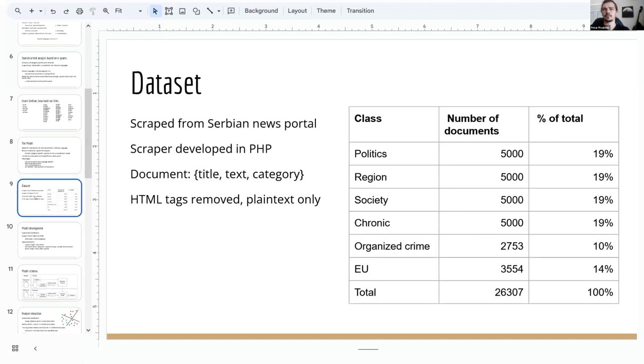A dataset is formed by scraping the news from Serbian news portal. It required writing a simple scraper, which we happily implemented in PHP, and the resulting dataset contains roughly 32,000 documents. Each document contains a title, text, and category. HTML tags are removed. We have plain text content only. The table on the right shows the categories and number of collected documents classified in each category. The dataset can be considered balanced in terms of category representation. We also see that the categories are thematically relatively close. We have politics, regional, society, chronic, organized crime, European Union. It's not that we have web development and Greek philosophy, which further highlights the measured accuracy, which will be presented later.